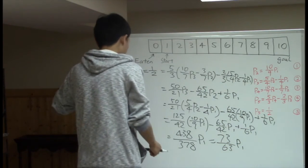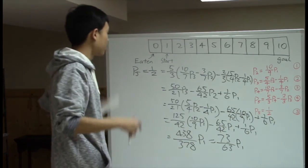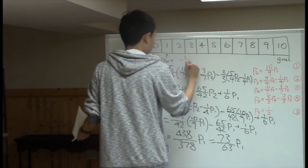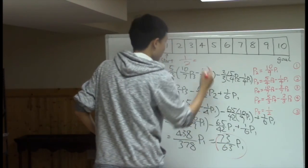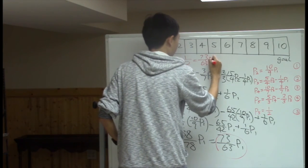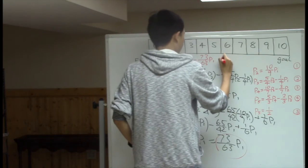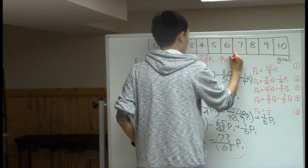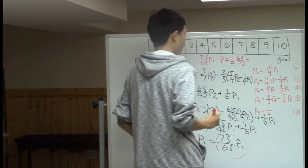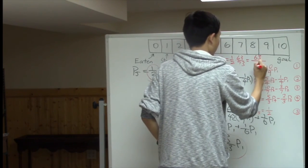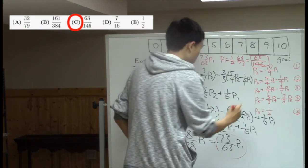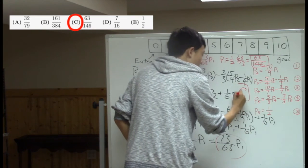Now, this equation became, 1/2 equals 73/63 p1. And we get p1 equals 1/2 times 63/73, which is 63/146. And that's our answer choice, C.